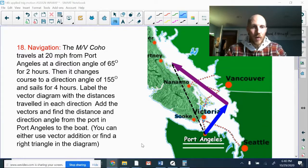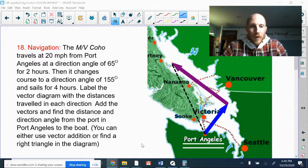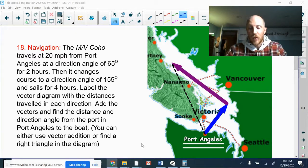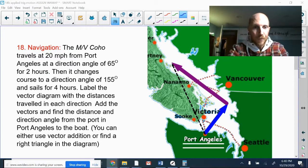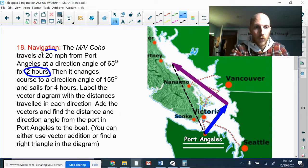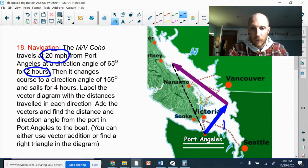This is another navigation problem, this time it is the M/V Coho, famed ferry from Port Angeles, traveling at 20 miles an hour from Port Angeles at a direction angle of 65 degrees for two hours. That takes it around the southern tip of Vancouver Island, so two hours at 20 miles an hour gives me a distance of 40 miles in the blue vector.